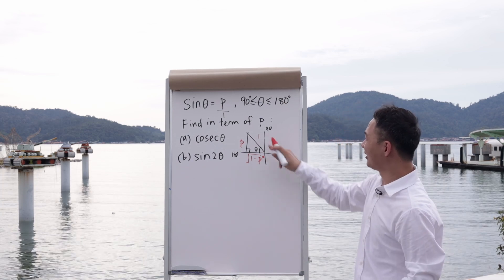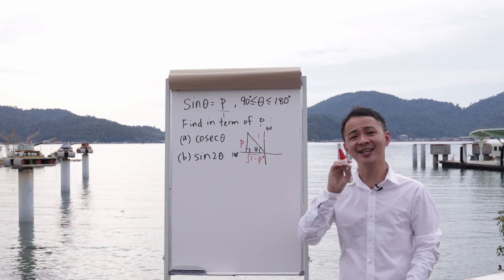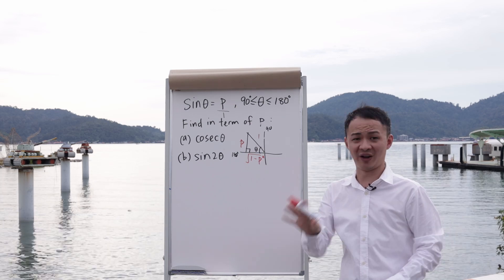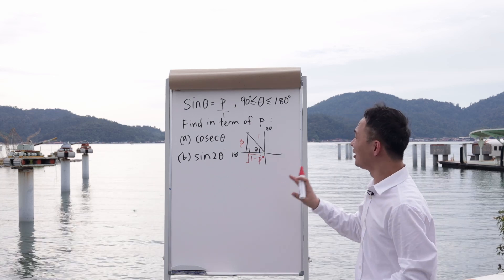Now I have all three sides. That means from this triangle, I can easily find sin, cos, or tangent if I want.